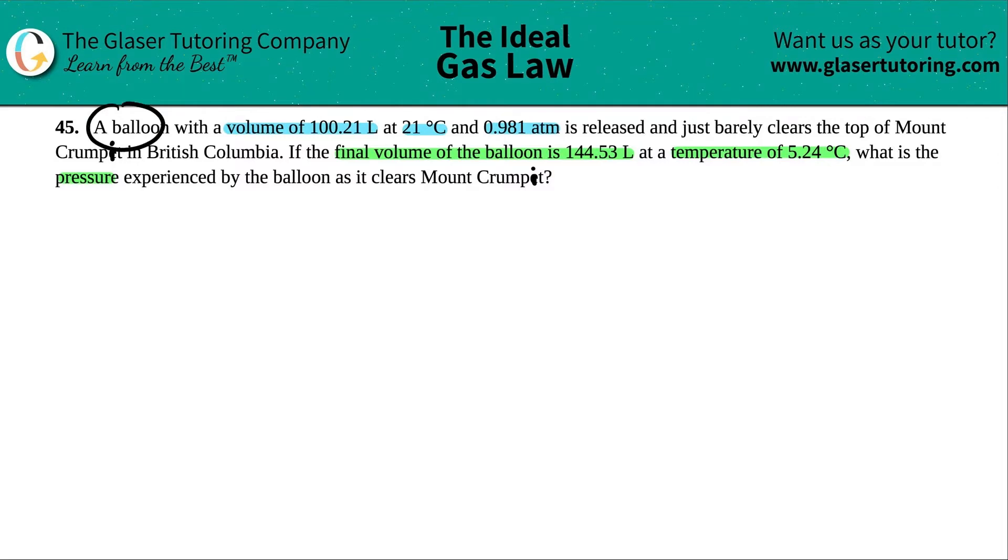We have a certain balloon that's going over Mount Crumpet, and I love that name - I think it's such a cool name for a mountain. It has a volume at a temperature and at a pressure. So we have a volume of 100.21 liters with the corresponding temperature of 21 degrees Celsius and a pressure of 0.981 atm.